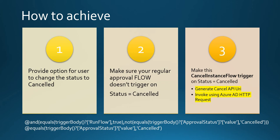We will use a trigger condition in the second flow where status is equal to cancel. So whenever the user changes the status of the record to canceled, the second flow will get triggered. In this flow, we will generate the API URL which we'll use to cancel the flow instance. There are APIs exposed for flows, and we'll invoke those API URLs using the Azure AD HTTP request action.